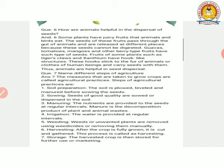Fruits of some plants such as tiger claws and xanthium have hook-like structures, like velcro. These hooks stick to the fur of animals, they get into their body and the clothes of human beings and carry seeds with them. Thus animals are helpful in seed dispersal.